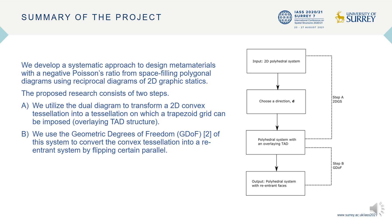More precisely, we identify systems which can be transformed into auxetic systems. These are called polyhedral systems with an overlaying TAD. Moreover, we describe a methodology using geometric degrees of freedom to transform these systems into auxetic systems.